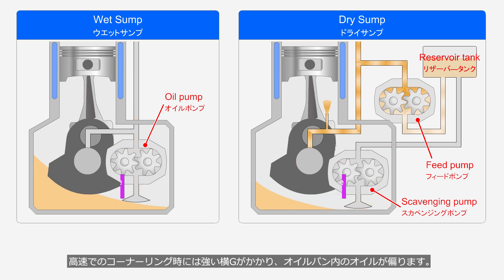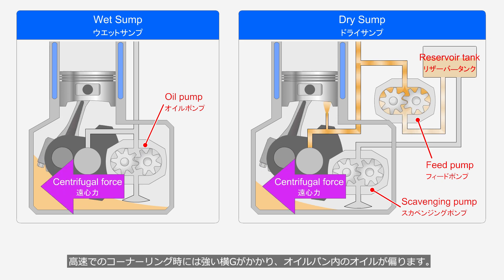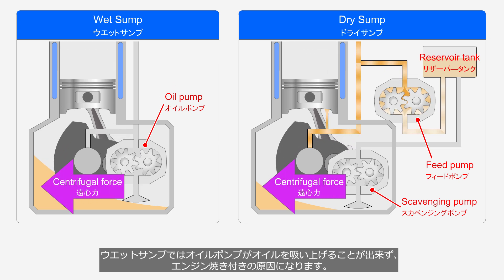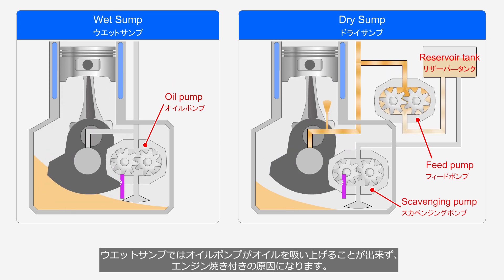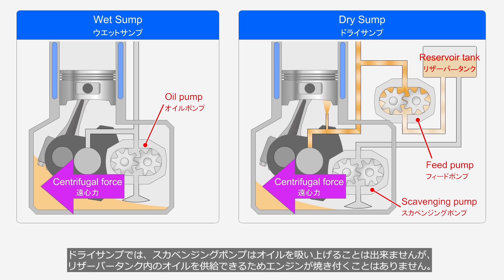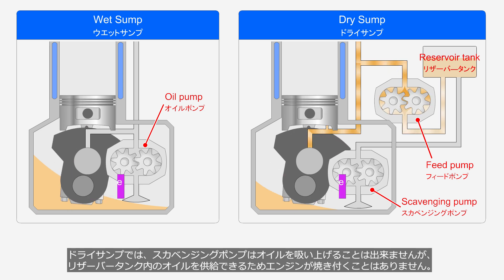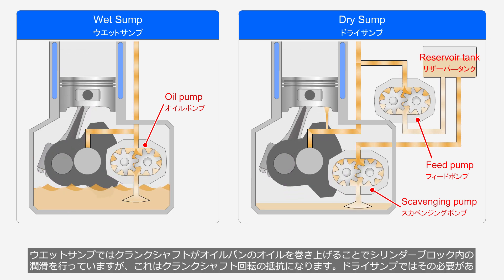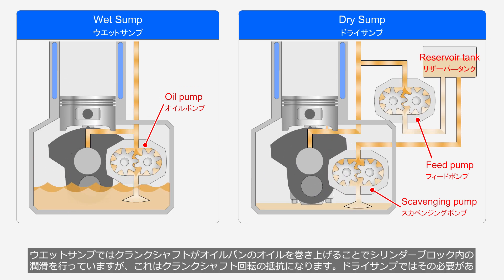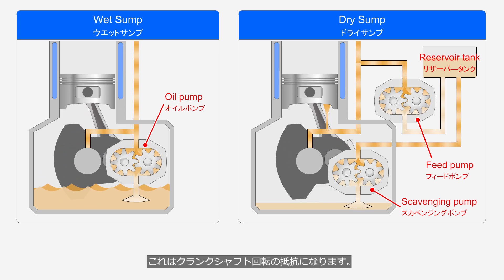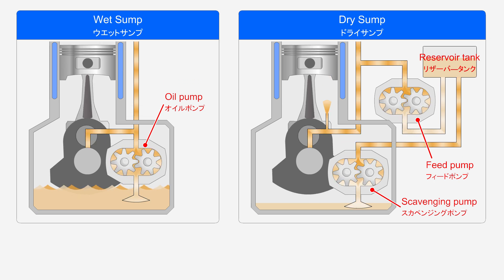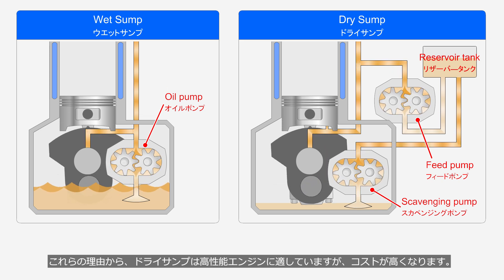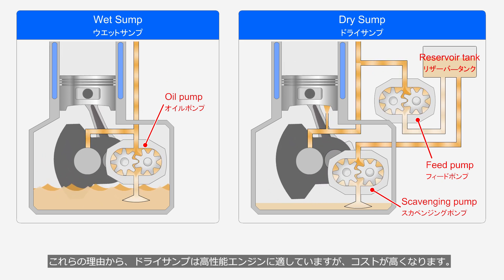During high-speed cornering, high lateral G-forces are applied, causing the oil in the oil pan to be pushed to one side. In a wet sump system, the oil pump may fail to draw up oil, which can lead to engine seizure. In a wet sump system, the crankshaft splashes oil from the oil pan to lubricate the inside of the cylinder block, but this creates resistance to the crankshaft's rotation; in a dry sump system, this is not necessary. For these reasons, dry sump systems are well-suited for high-performance engines, but they come with higher costs.